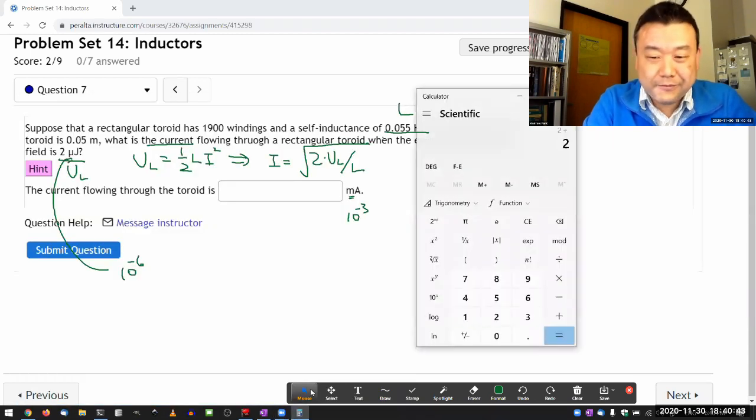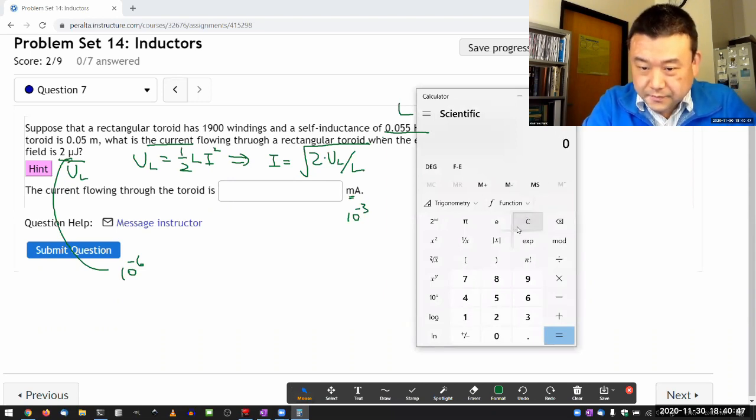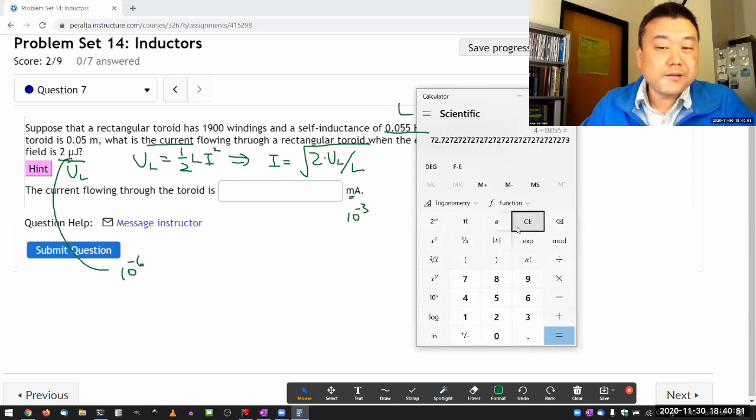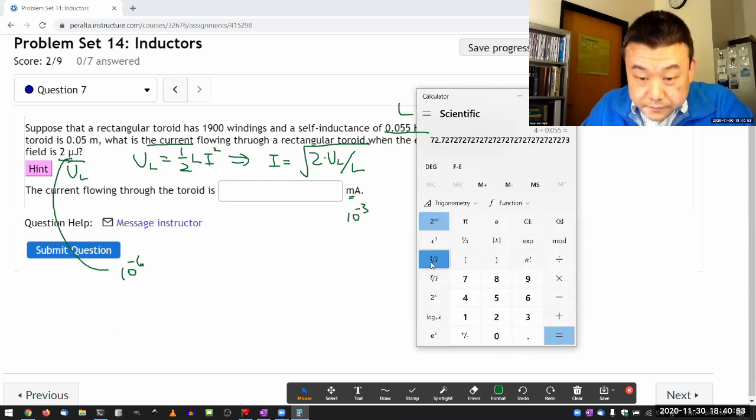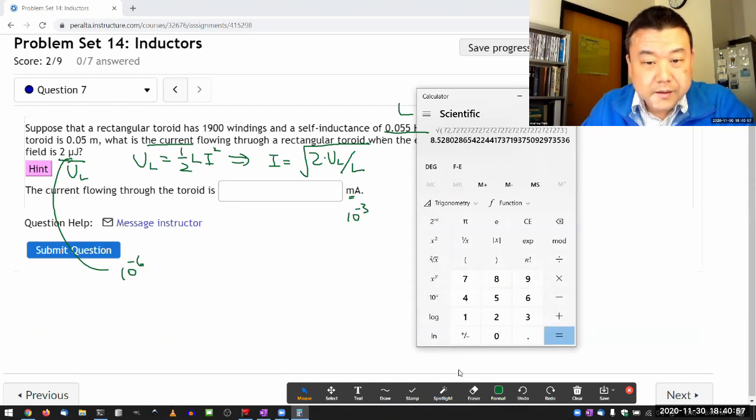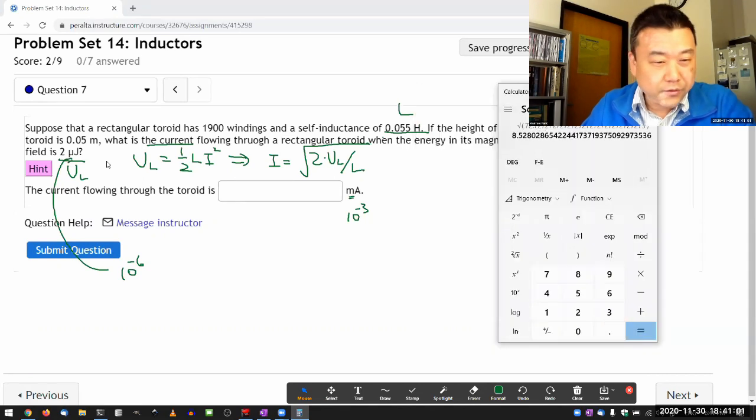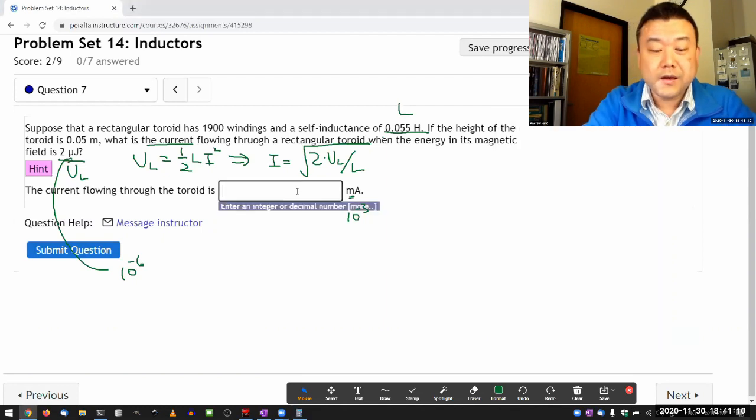Four divided by 0.055, take the square root of that. 8.53. And I worked my way through these powers of 10 to convince myself that this is the correct power of 10. So the amount of current flowing should be 8.53 milliampere.